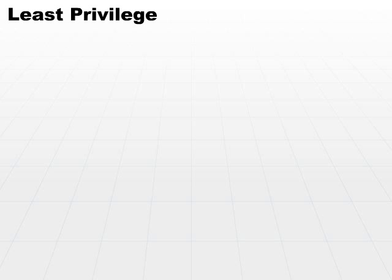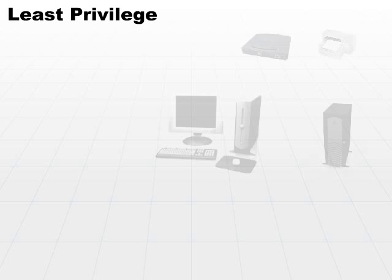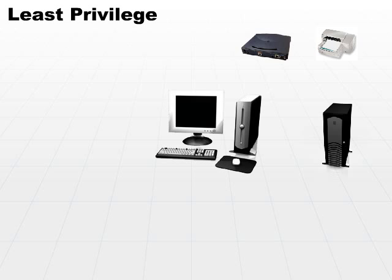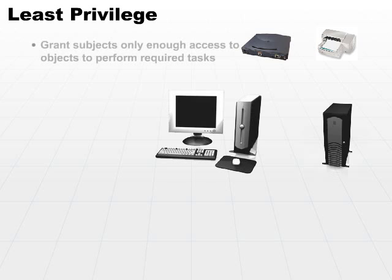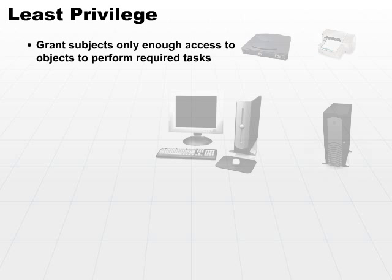There are several concepts that you want to take a look at and be comfortable with. Number one is least privilege. There are many systems out there that start off with global privileges. In secure systems, we recommend the exact opposite. You want to support the concept of least privilege, which means that you grant subjects only enough access to objects in order that they can perform the required tasks.